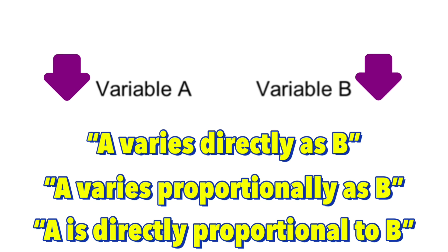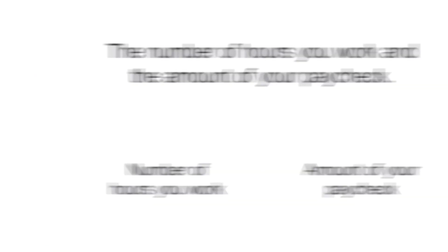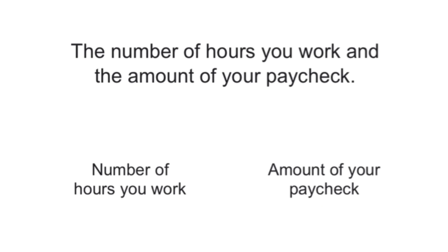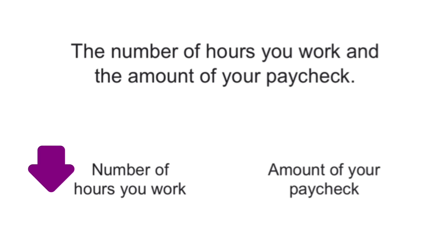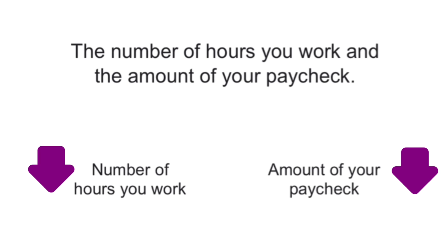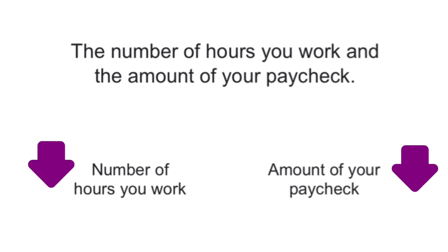Let's take a look at some real-life examples of direct variation. The number of hours you work and the amount on your paycheck are directly proportional to each other. If you work more hours, you get more money. On the other hand, if you work fewer hours, you get less on your paycheck. So the number of hours you work is directly proportional to the amount of your paycheck.